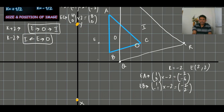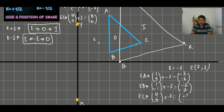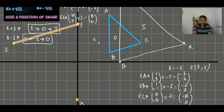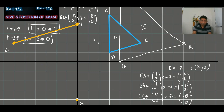For point C with scale factor minus two: the column vector is (4, 0). Four times minus two is minus eight, giving (-8, 0). From the center, counting eight steps across, this position is the image of C. When I join these three points X, Y, Z, we have the new triangle.